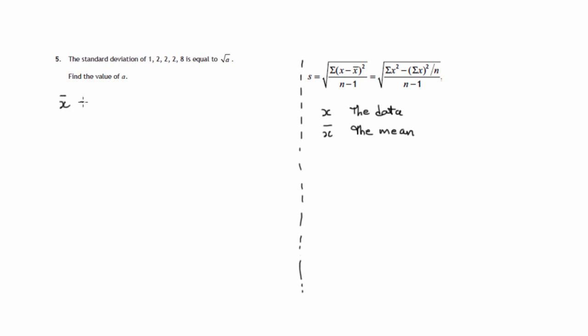Now, we're going to need to work that out. X̄, remember that's the sum of these: 1 plus 2 plus 2 plus 2 plus 8 divided by the number of pieces of data. There's five pieces of data. That's 10, 12, 14, 15 divided by 5. That gives us a mean of 3.